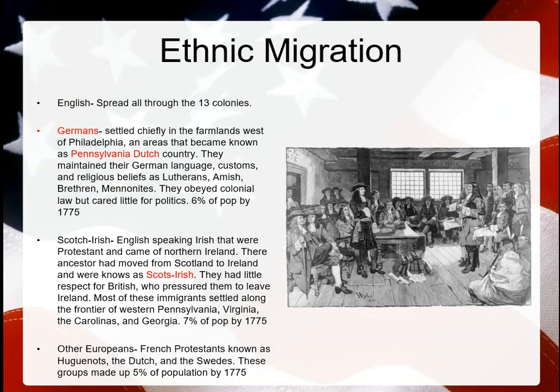We have ethnic migrations happening. The English are spreading all over the 13 colonies. Germans are coming over and establishing farmlands west of Philadelphia in Pennsylvania Dutch country. They brought their own language, customs, and religions such as Lutheranism, and groups like the Amish, Brethren, and Mennonites — many of which are still around today. They obeyed colonial law but cared little for politics. They just wanted to live in their own community and worship God the way they wanted. By 1775, Germans made up about 6% of the population.